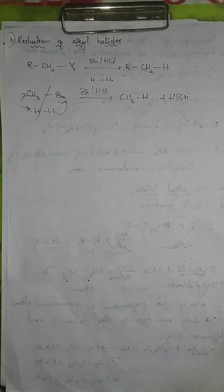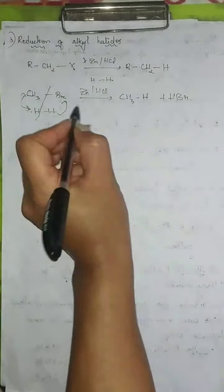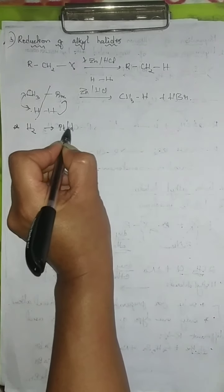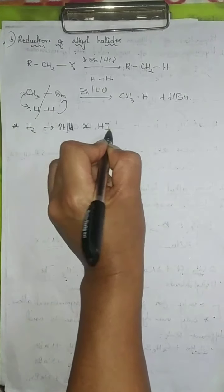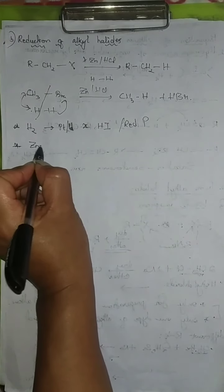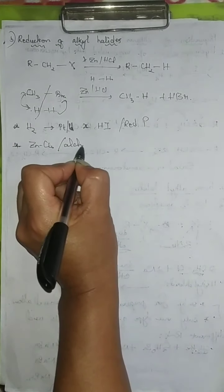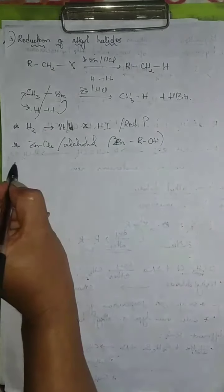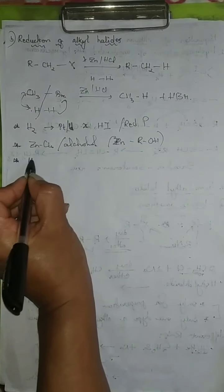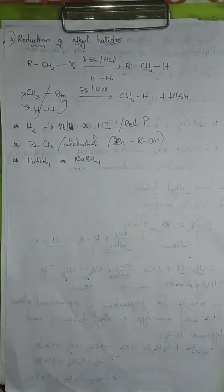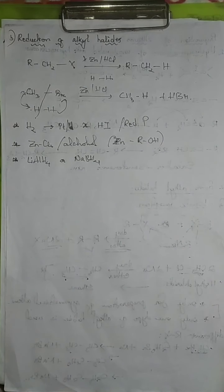Important reducing agents used in the reduction of alkyl halides include: zinc-copper couple in the presence of alcohol (Zn/Cu, ROH); hydrogen gas in the presence of platinum or palladium; hydrogen iodide in the presence of red phosphorus; and lithium aluminium hydride (LiAlH4) or NaBH4.